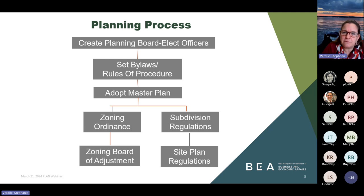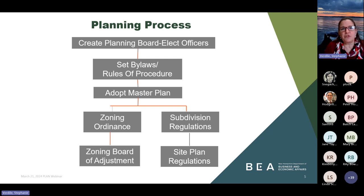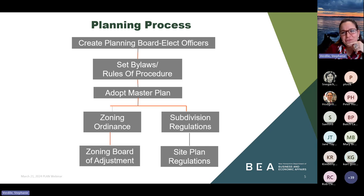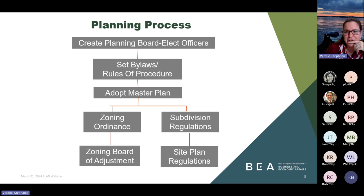Subdivision regulations — what is the RSA for adopting subdivision regulations? As planning board members, you should have that right at the tip of your tongue, ready to jump in with your answer. Andrew got it — 674-36. Yep, 35 and 36. So we had Rich come in and Andrew — very good.